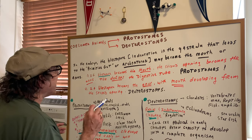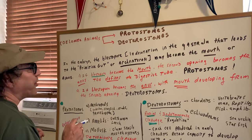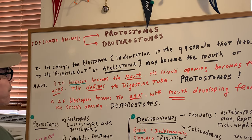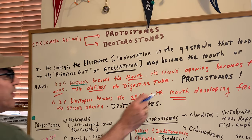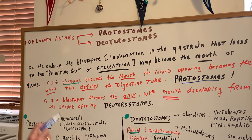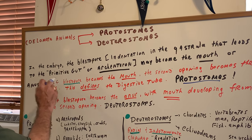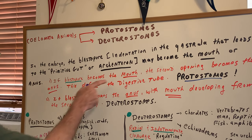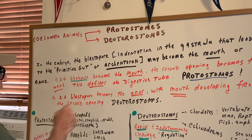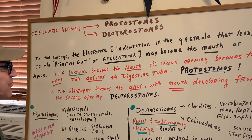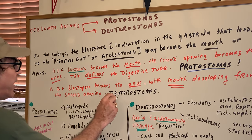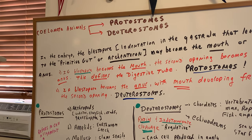If the blastopore becomes the mouth, the second opening becomes the anus, and this defines the digestive tube. This is what happens in protostomes. So in a protostome, the blastopore — that first opening — think mouth, anus second. If the blastopore becomes the anus first, with the mouth developing from the second opening, we call this a deuterostome.